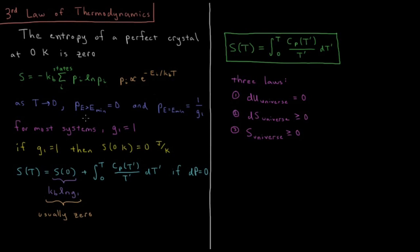Since S of 0 is going to be 0 in most cases, we can have a formula for the absolute entropy of our system. The entropy as a function of temperature is the integral from 0 Kelvin up to that temperature of the constant pressure heat capacity divided by the temperature integrated over temperature.